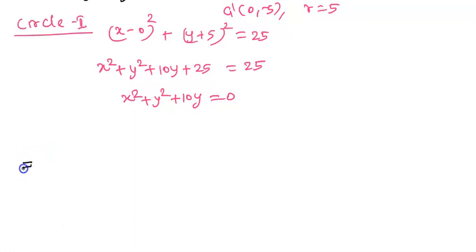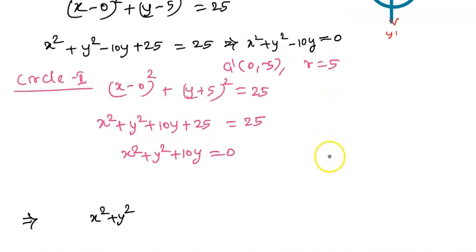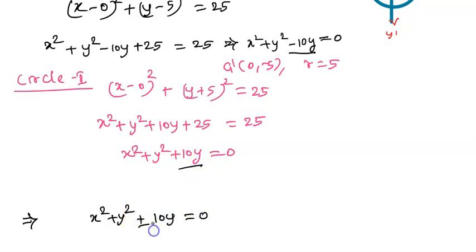So the equations of the circles are: x squared plus y squared — with plus 10y and minus 10y respectively — each equal to 0. These are the final equations for the two circles. Thank you.